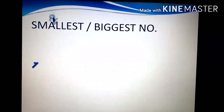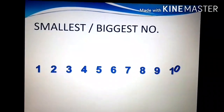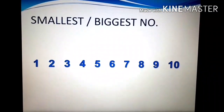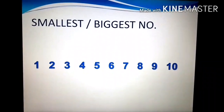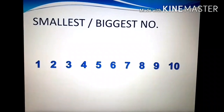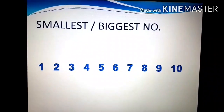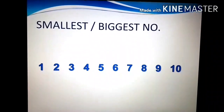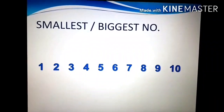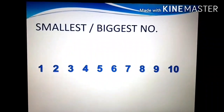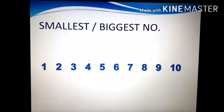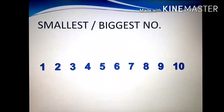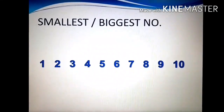Now see here, numbers 1 to 10 are there. In these numbers 1 to 10, you have to make out which is the smallest number. 1 is smaller than 2, 2 is smaller than 3, 3 is smaller than 4, 4 is smaller than 5, 5 is smaller than 6, 6 is smaller than 7, 7 is smaller than 8, 8 is smaller than 9, and 9 is smaller than 10. So this way you can make out which is the smallest number. The things which are in less numbers are smallest numbers.